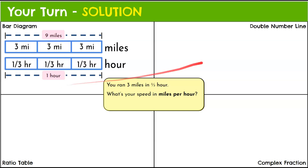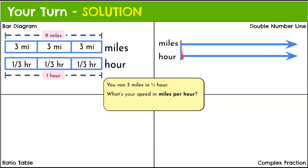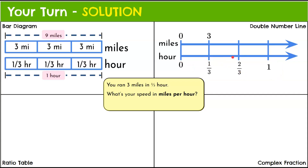Let's check with the double number line. We have miles on top and hour on the bottom, starting at zero. The bottom needs to reach one, and we're going in thirds: one-third, two-thirds, three-thirds which is one. Our one hour is now on the bottom number line. Every third of an hour we go three miles — three plus three gives six, six plus three gives nine. Our unit rate is nine miles in one hour.